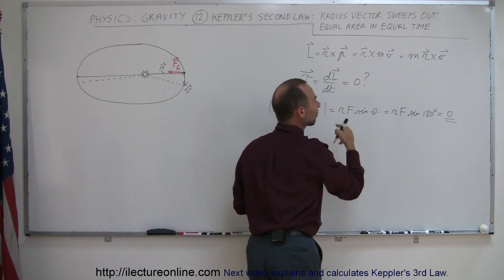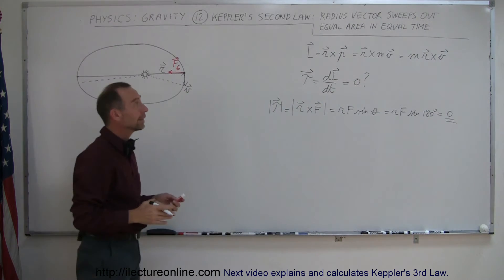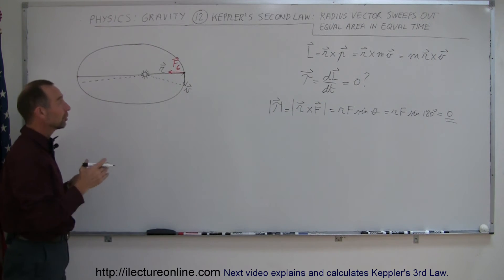Which means that dL dt has to be equal to zero. So we just showed you that the angular momentum of the Earth in the orbit around the Sun, that angular momentum is a constant, doesn't change.